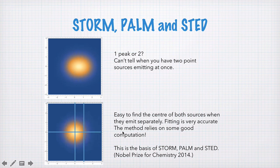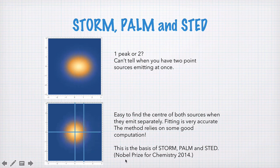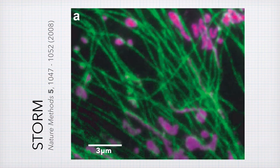Of course this is going to depend on some pretty hefty computation — you have to do a lot of fitting to figure out exactly where the centre of all your emitters is. This idea that led to the developments of STORM, PALM, and STED led to the Nobel Prize for Chemistry being awarded to these techniques and their inventors in 2014.